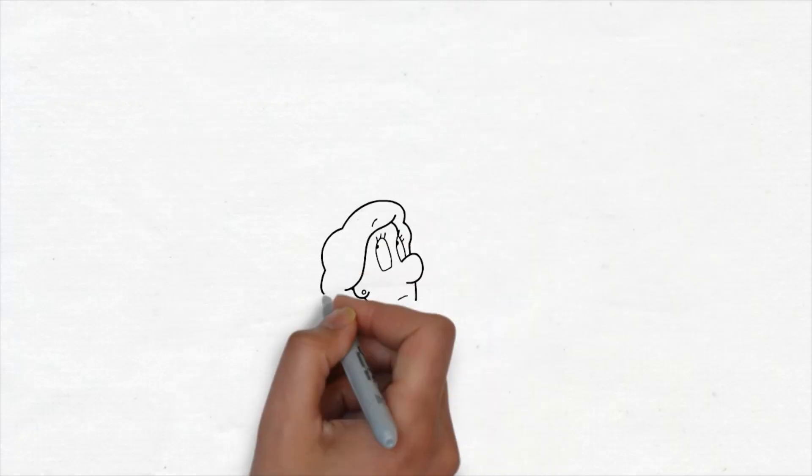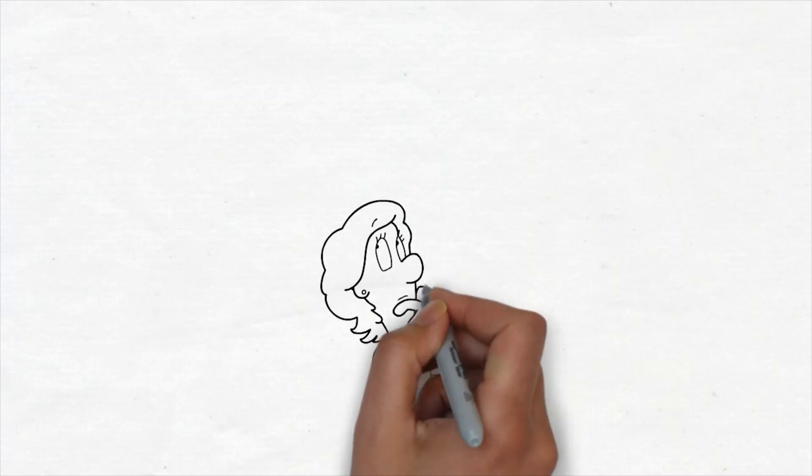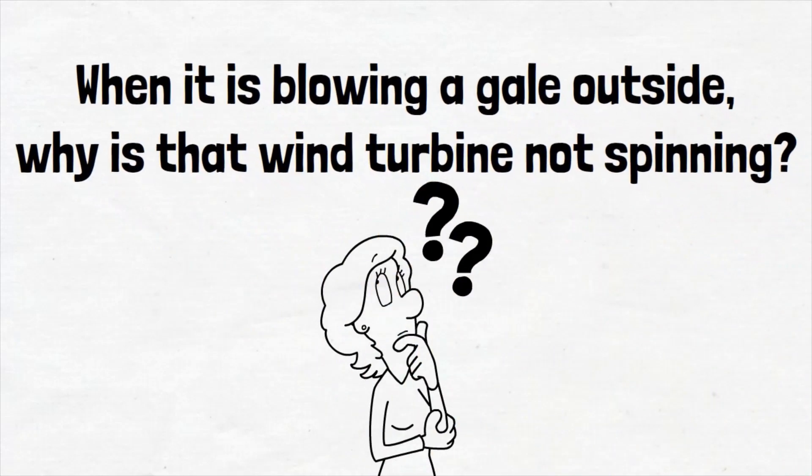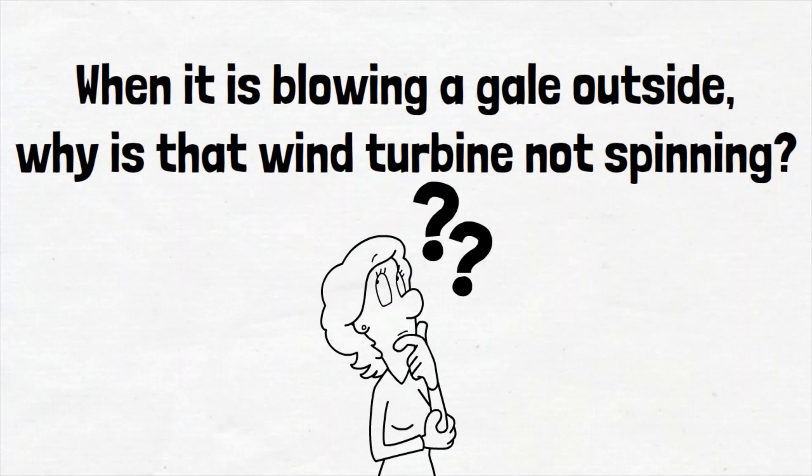One question often asked when it is blowing a gale outside is why is that wind turbine not spinning? In some cases this may be because the wind is actually blowing too fast and the wind turbines don't spin for safety reasons.